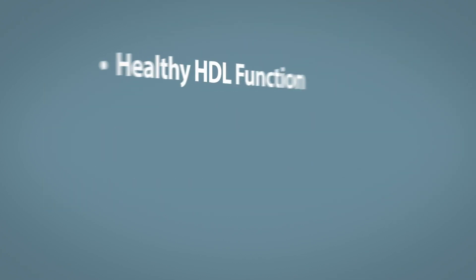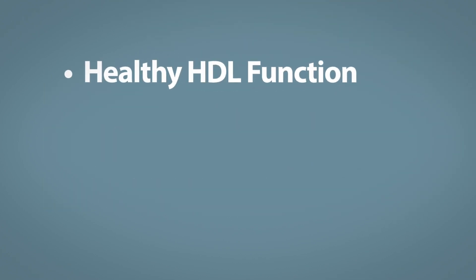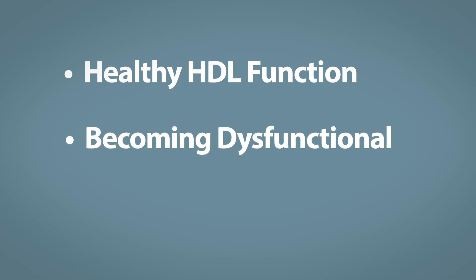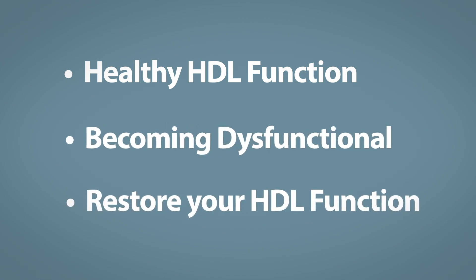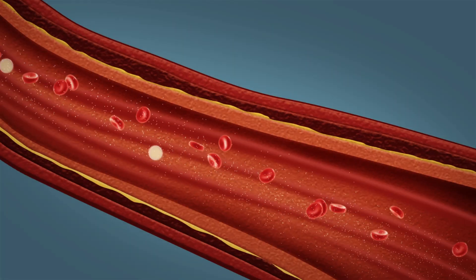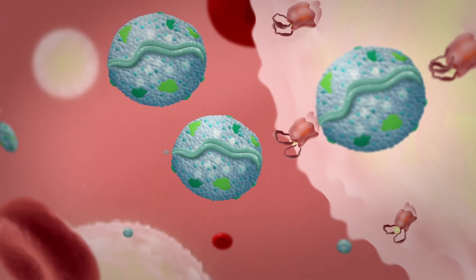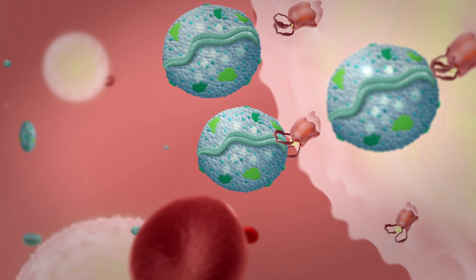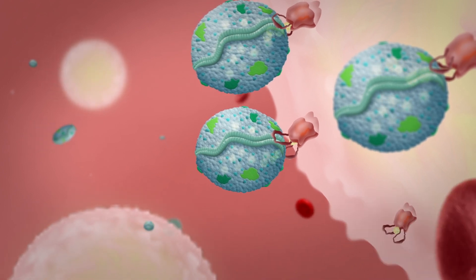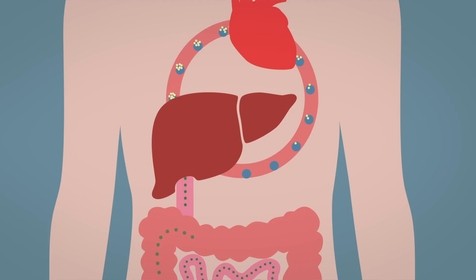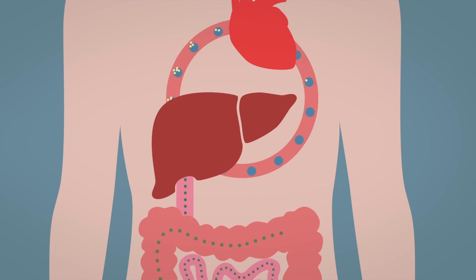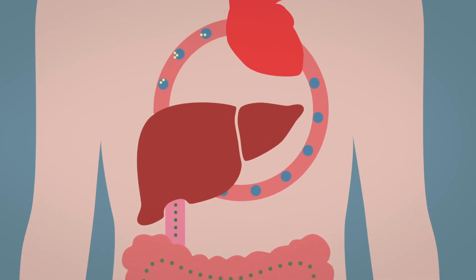In this video, you will learn how HDL functions when healthy, what happens when HDL becomes dysfunctional, and how to restore HDL function. HDL particles circulate in the bloodstream, accepting excess cholesterol from cells such as arterial plaque foam cells, and carry the cholesterol to the liver to be processed and removed from the body. This vital function is known as reverse cholesterol transport.